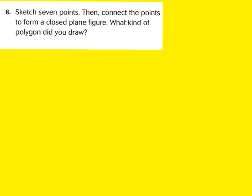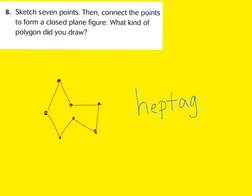For number eight, it says sketch seven points, then connect the points to form a closed plane figure. What kind of polygon did you draw? You may want to refer back to that first slide with all those different regular polygons so you'll remember the name. I have seven different points and seven different sides — a seven-sided figure is called a heptagon. This is not regular because all my angles are not the same and all my sides are not the same length. Yours probably looks way different than mine, but that's okay — this is a free draw.